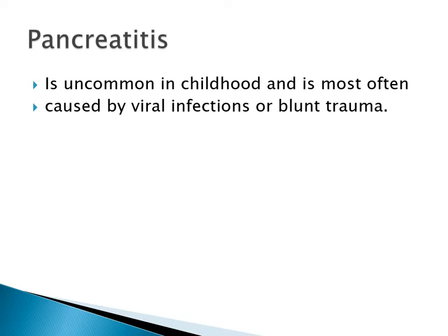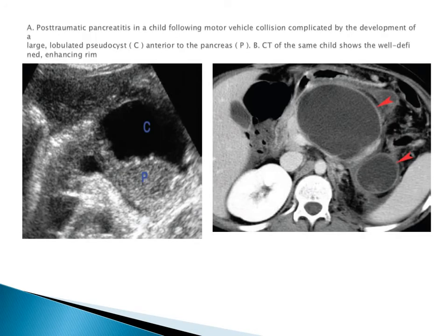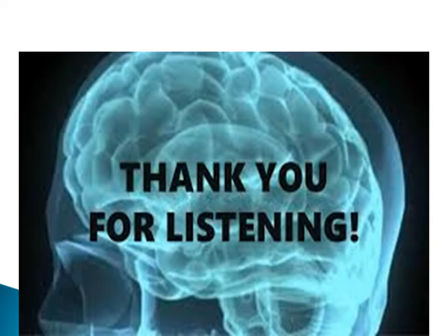Pancreatitis in children is uncommon and most often caused by viral infection or blunt trauma. The findings are similar to adults - the pancreas will be enlarged and hypoechoic in the acute state. This is a case of post-traumatic pancreatitis in a child, with obliterated pseudocysts demonstrated on CT and ultrasound. Thank you very much, that was a good focused presentation.